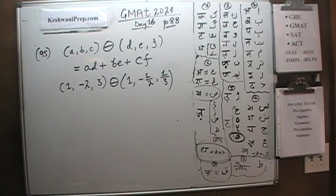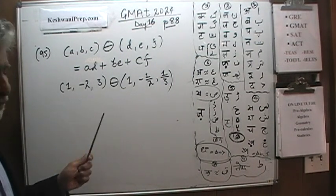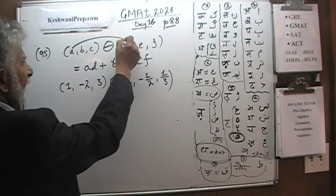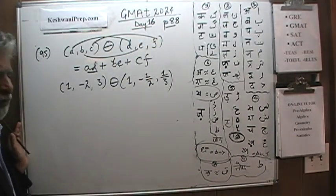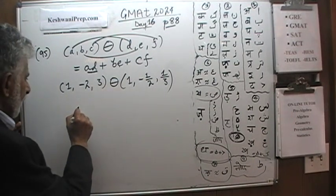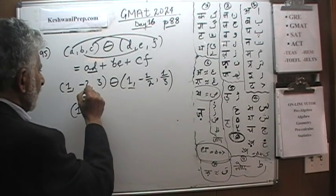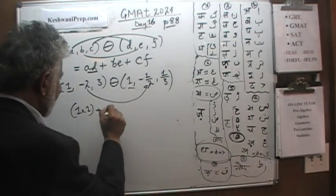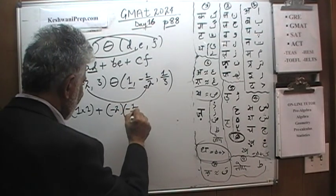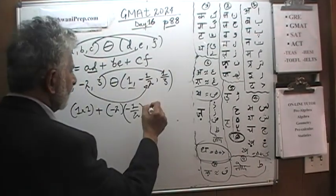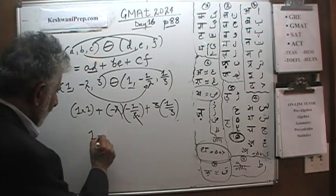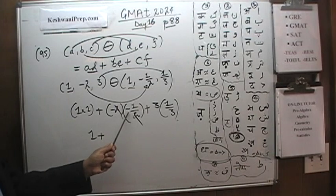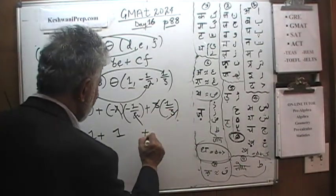If we study it closely, we see that the result is a times d, then b times e, then c times f. So we do: 1 times 1, then negative 2 times negative one-half, then 3 times one-third. One times one is 1. Negative two times negative one-half — the twos drop out and the negatives give us positive 1. Three times one-third — the threes drop out, giving us 1. So the total is 1 plus 1 plus 1, and the answer is 3.